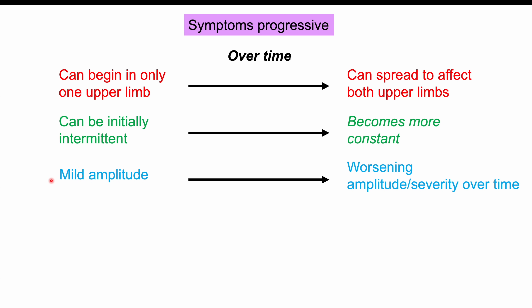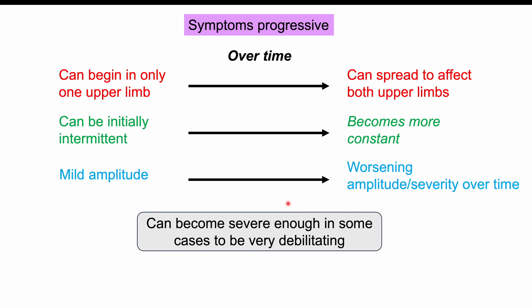Initially the amplitude and severity of the tremor is mild, but over time the severity worsens, eventually becoming very severe and debilitating — affecting job functioning, getting dressed, and feeding oneself. It is important to note that essential tremor involves only a tremor. If there are other signs and symptoms such as changes in mental status, personality, or memory, this may indicate another condition, unless the patient is older and has a concurrent diagnosis.